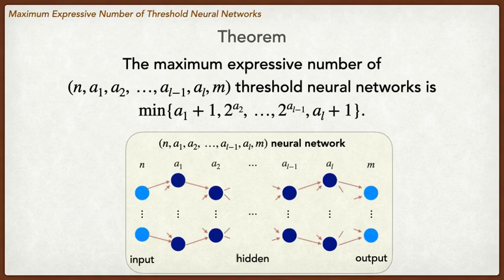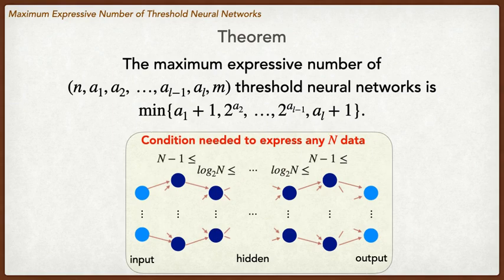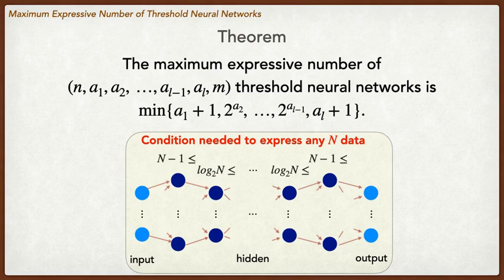We will prove this theorem. This theorem shows the maximum expressive number is exactly equal to this value. The theorem says: to express arbitrary large N data, a neural network must satisfy this condition. The first and the last hidden layers need more than N-1 neurons, and other hidden layers need more than log base 2 of N neurons. Now we prove this theorem.